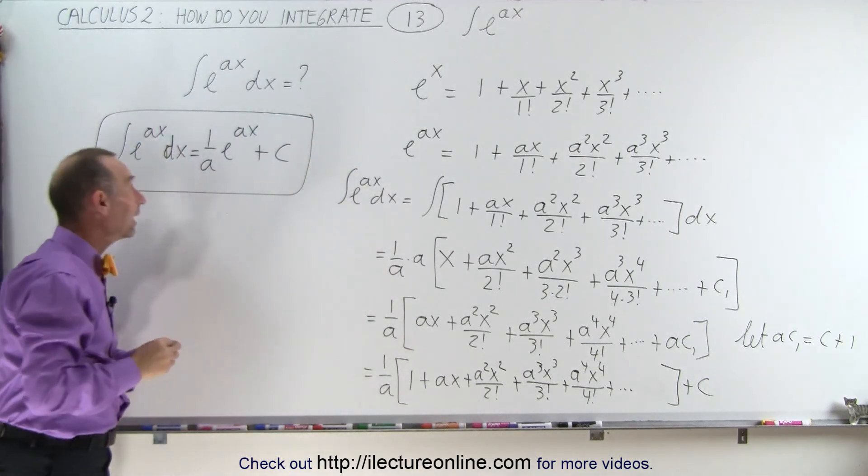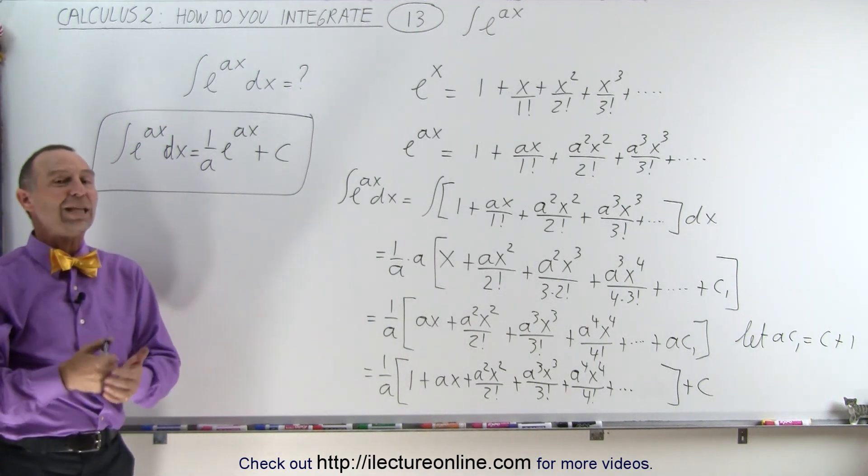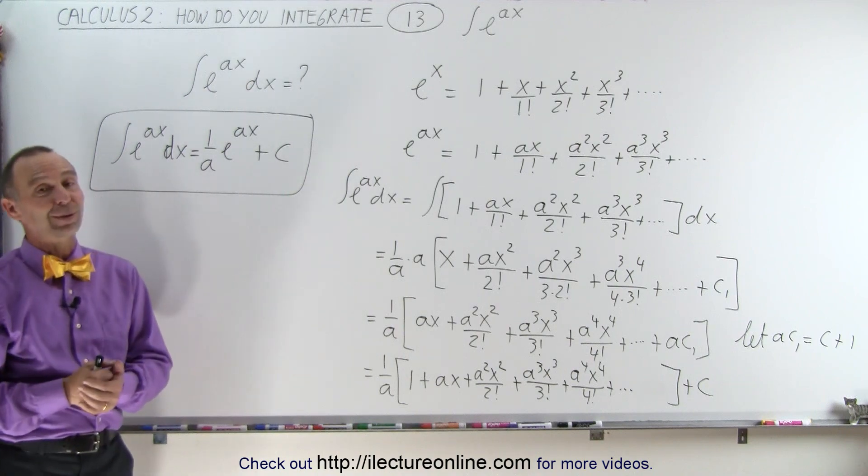So there you have it. The integral of e to the ax dx is simply 1 over a times e to the ax plus c, and that's how we can show how to do that.